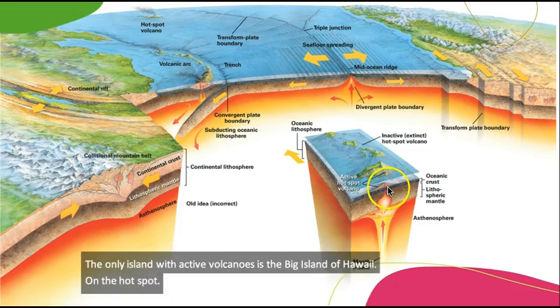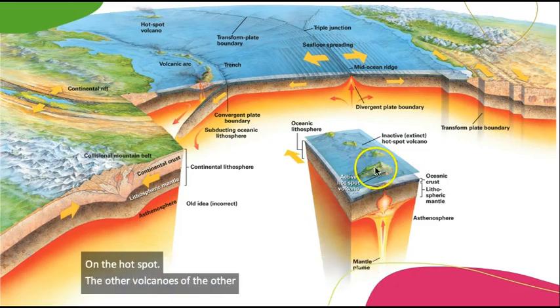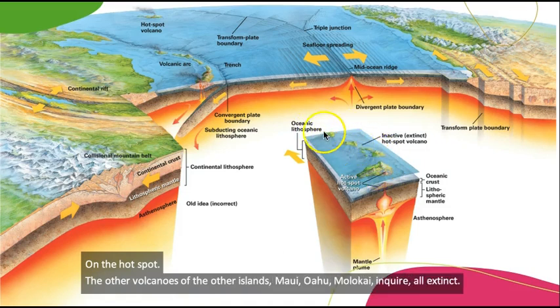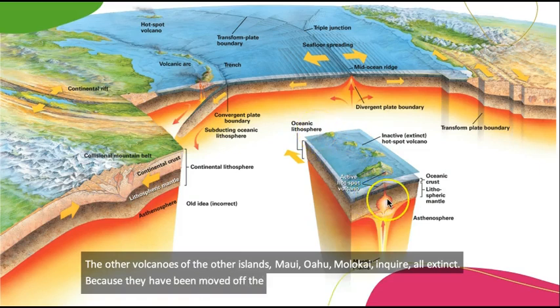The other volcanoes of the other islands, Maui, Oahu, Molokai, and Kauai, are all extinct because they have been moved off the hot spot as the Pacific Plate has moved to the north.